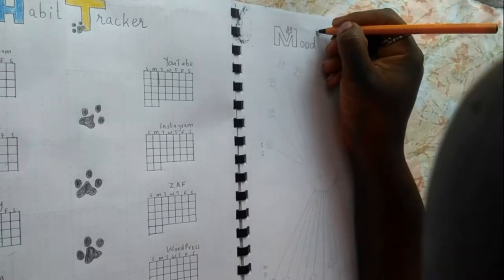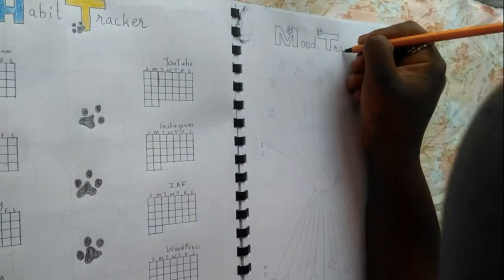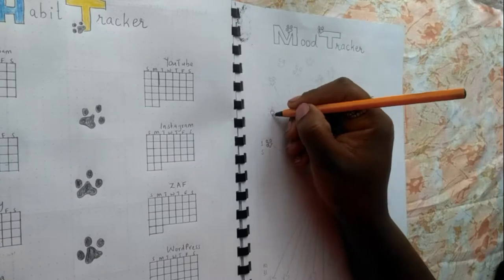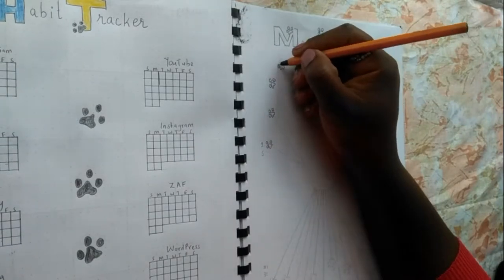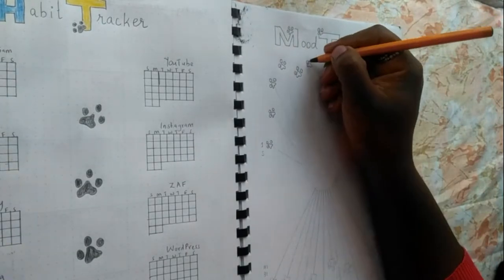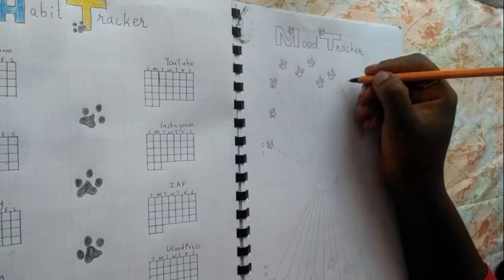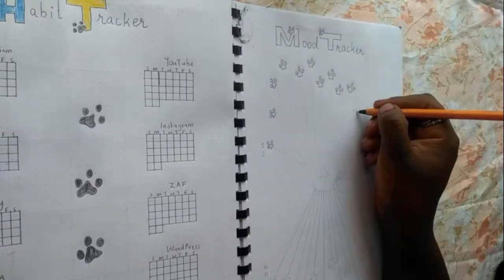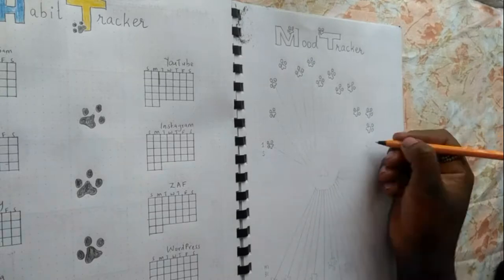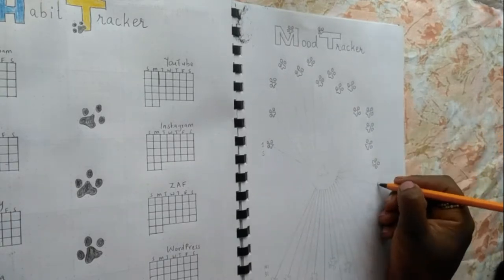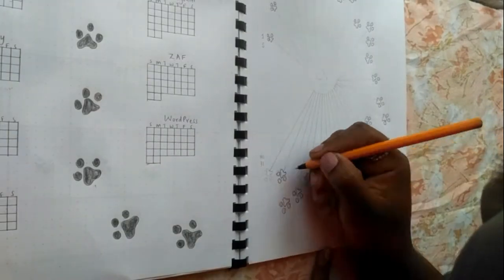Next is my mood tracker, which I am really excited about. Of course, I started with the title at the top and then went ahead and added tiny paw prints for every single day. This I'm going to color according to the mood of the day. Again, I made a mistake and didn't add an extra day to have 31 days, but I corrected that later.